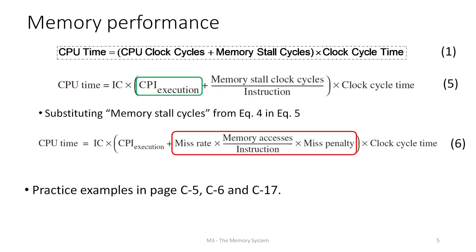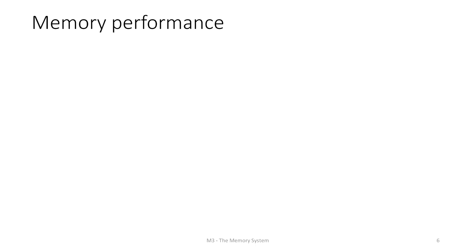There are good practice examples in the textbook on pages C5, C6, and C17. All three examples present data for each of these terms in a slightly different way and give good practice on calculating CPU time. Specifically for memory performance, there is another metric called Average Memory Access Time, or AMAT.